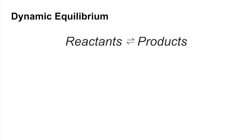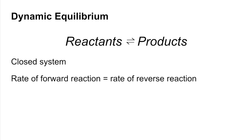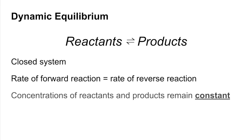Quick revision video on AS Equilibria. We'll start with what's meant by a dynamic equilibrium. We're talking about reversible reactions that are taking place in a closed system. We achieve dynamic equilibrium when the rate of the forward reaction is equal to the rate of the reverse reaction, and at that point the concentrations of the reactants and products remain constant.